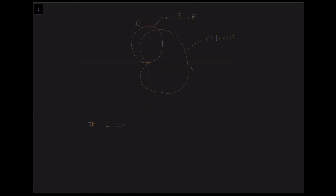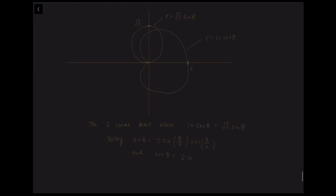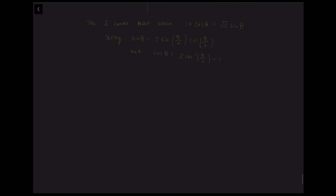We use the identities of sin and cos to evaluate the common points. For sin theta, we use the double angle formula: sin theta equals 2 sin(theta/2) cos(theta/2). For cos theta, we use the half angle formula: cos theta equals 2 cos squared(theta/2) minus 1. Substituting both into the original equation, we obtain 1 plus 2 cos squared(theta/2) minus 1 equals 2 root 3 sin(theta/2) cos(theta/2).